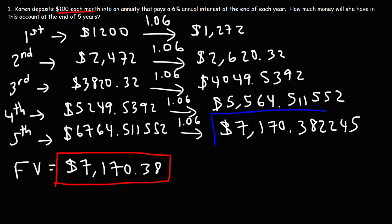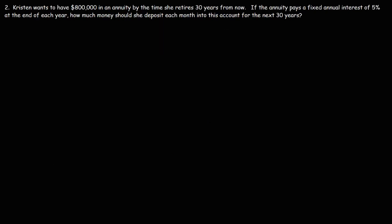Now you understand how this answer can be calculated using both the formula and the step-by-step process. Of course the step-by-step process is tedious, but it helps you understand where the number comes from. Now let's work on another problem using the same formula that asks for something different. Kristen wants to have $800,000 in an annuity by the time she retires 30 years from now. The annuity pays a fixed annual interest of five percent at the end of each year — how much should she deposit each month?